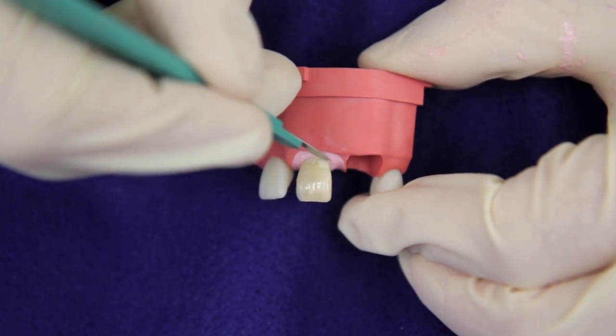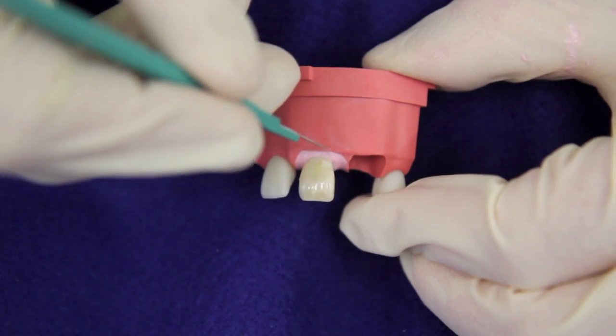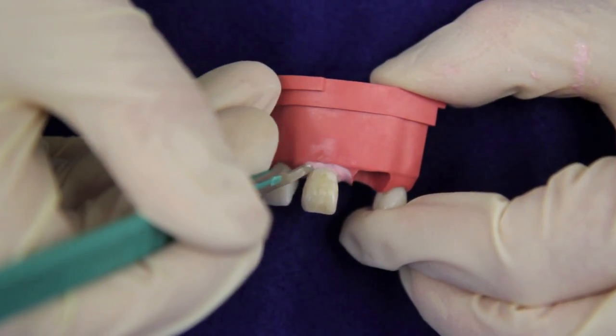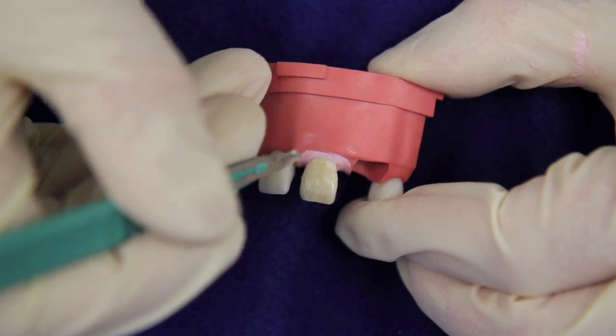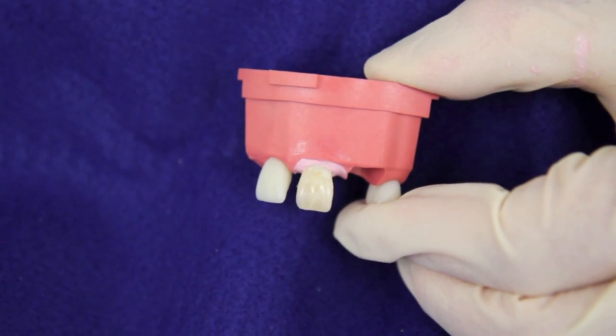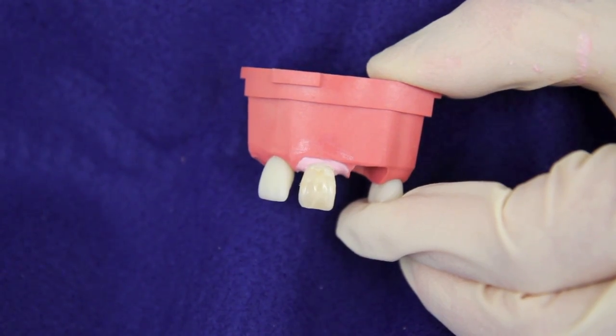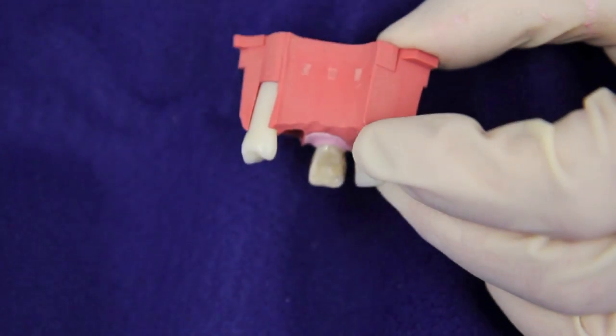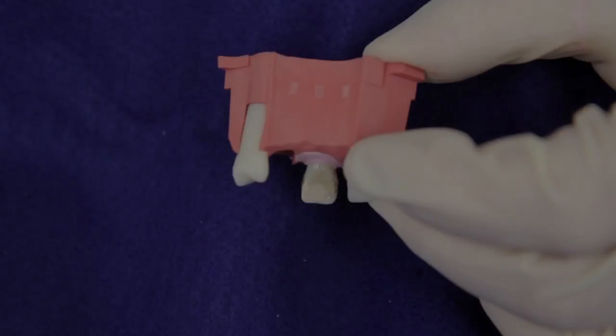Now we're cleaning up the excess flash with a sharp, disposable scalpel, to ensure that the CEJ is fully exposed, so that we can see the outline of the crown, and of the long axis of the tooth, both on the buckle and on the palatal.